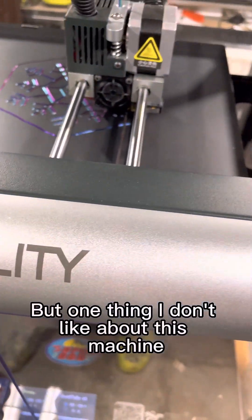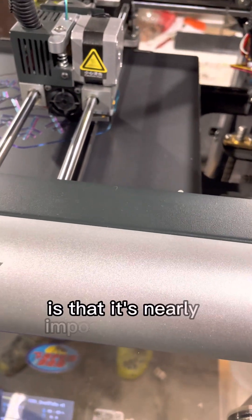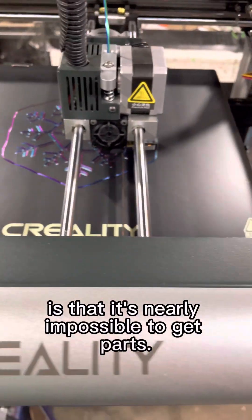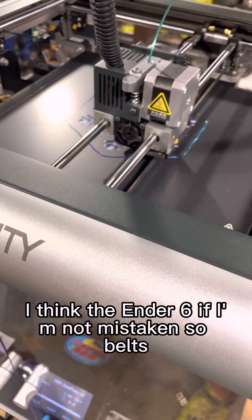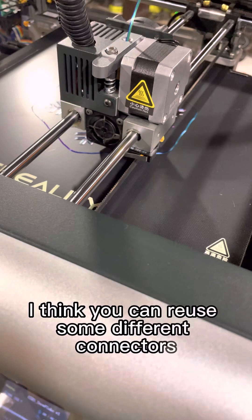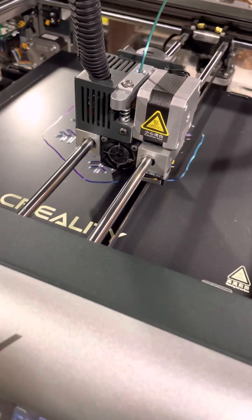But one thing I don't like about this machine—it's a big gripe that I have—is that it's nearly impossible to get parts. This machine does mimic a lot of, I think, the Ender 6 if I'm not mistaken, so belts I think you can reuse, some different connectors and whatnot you can use.